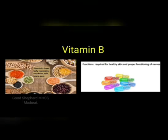Vitamin B-rich foods are green leafy vegetables, soya bean, milk, beans, peas, etc. Vitamin B is required for healthy skin and proper functioning of nerves.